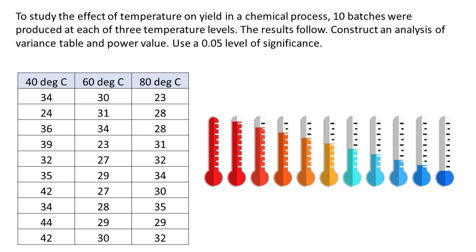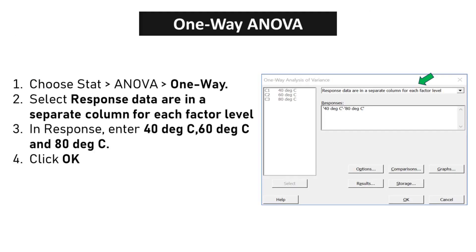Choose STAT ANOVA one way. Select response data are in a separate column for each factor level. In response, enter 40 degrees C, 60 degrees C and 80 degrees C, click OK.